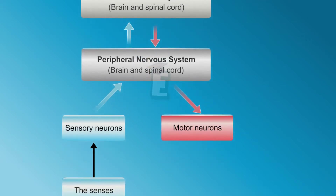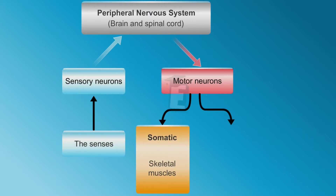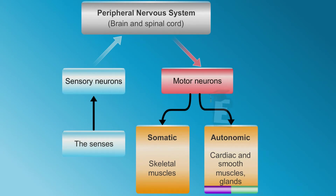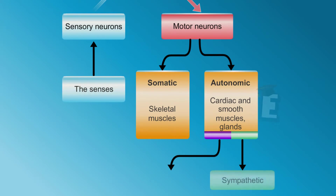If the impulses are instructions which are consciously controlled, then the skeletal muscles contract. Whereas if the impulses are instructions which are not consciously controlled, then cardiac and smooth muscles contract, or glands produce. According to its location and the organ served, the autonomic nervous system is divided into two types: the sympathetic and the parasympathetic.